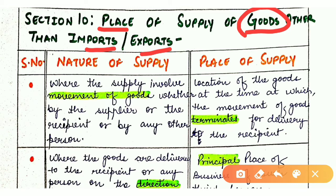Section 10 is about place of supply of goods other than imports and exports. The first case is where the supply involves movement of goods — whether by the supplier, the recipient, or any other person. Where goods are moved from one place to another, the place of supply is the location of goods at the time the movement terminates for delivery — meaning where the goods are delivered.